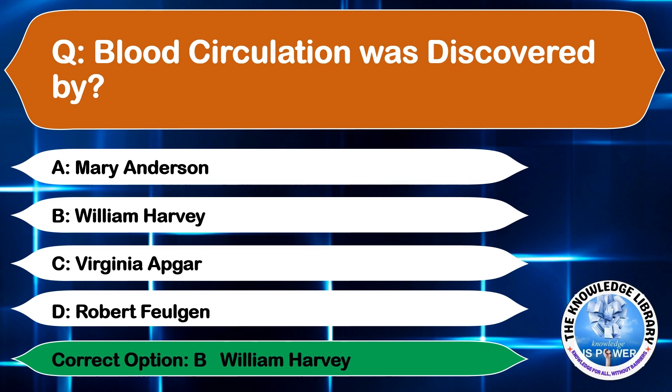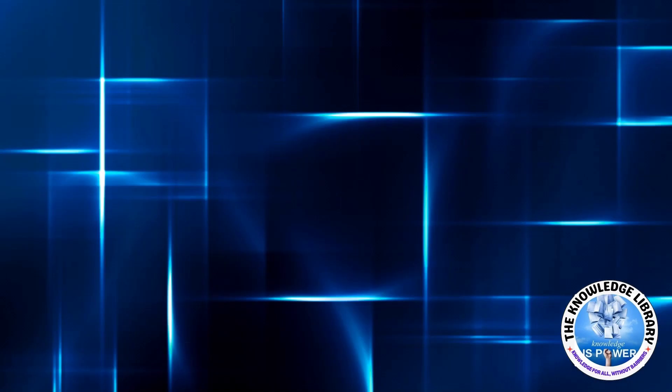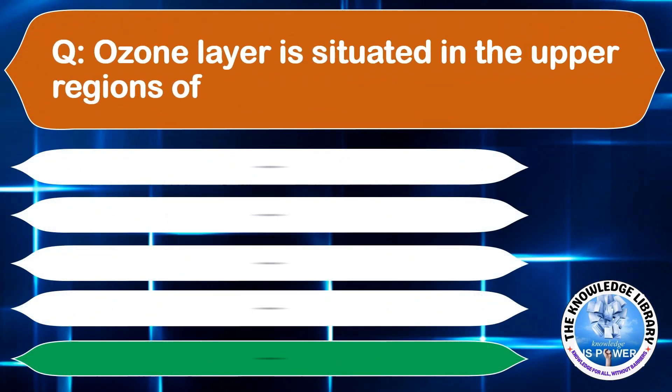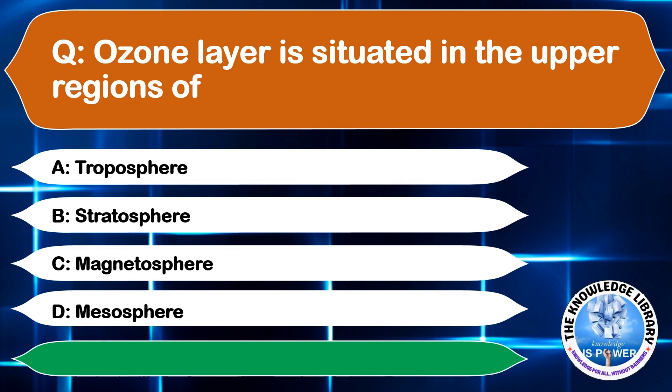Ozone layer is situated in the upper regions of: A: Troposphere, B: Stratosphere, C: Magnetosphere, or D: Mesosphere. The correct answer is option B, Stratosphere.